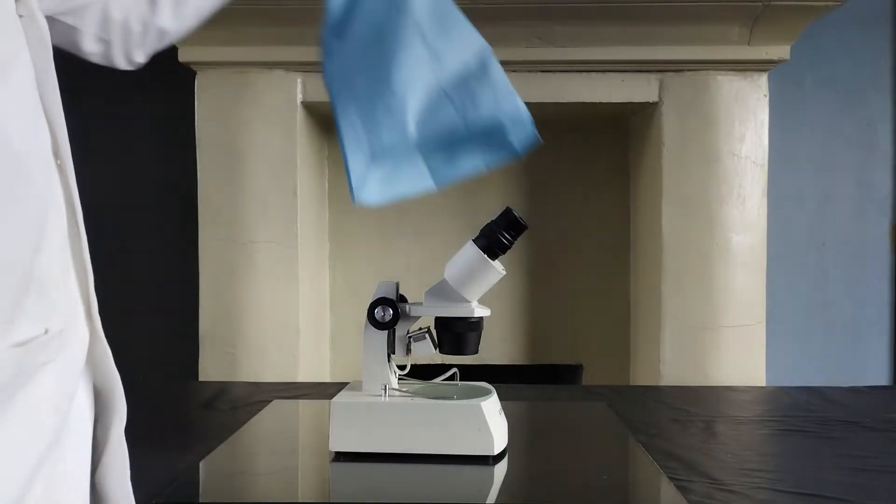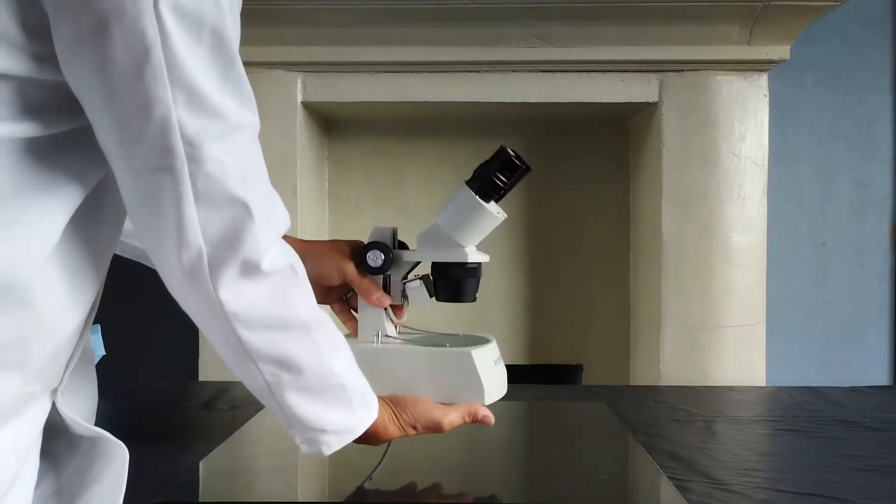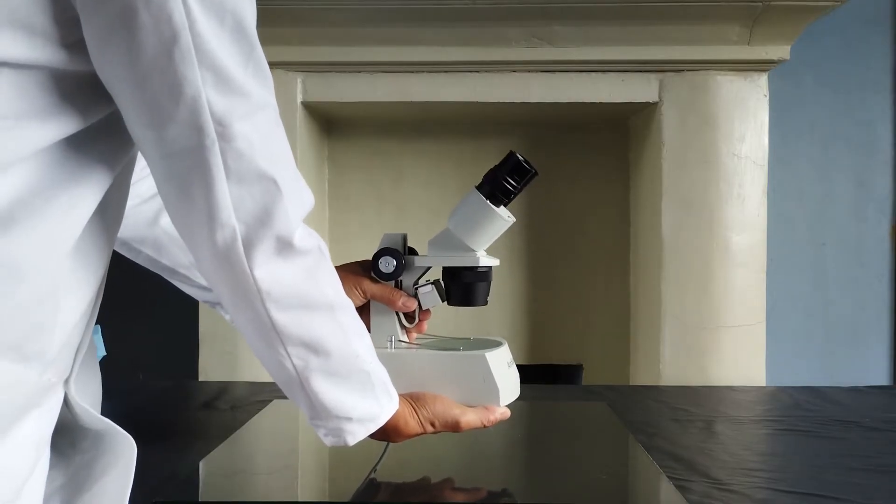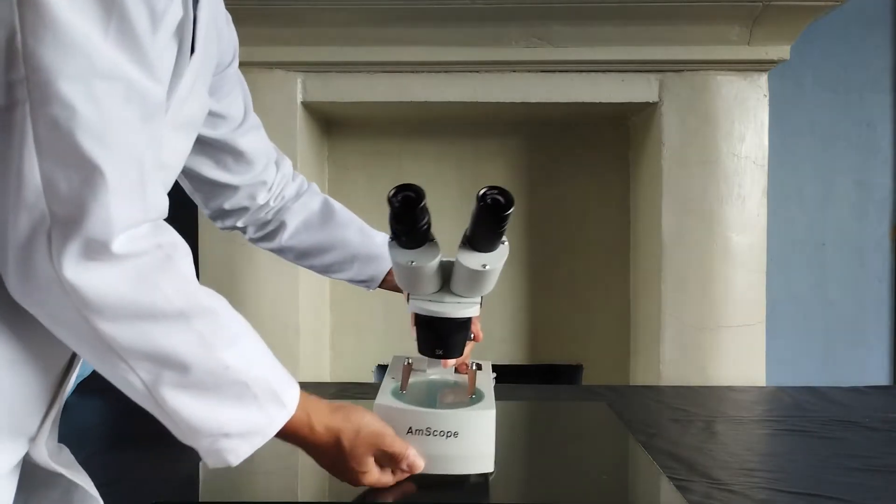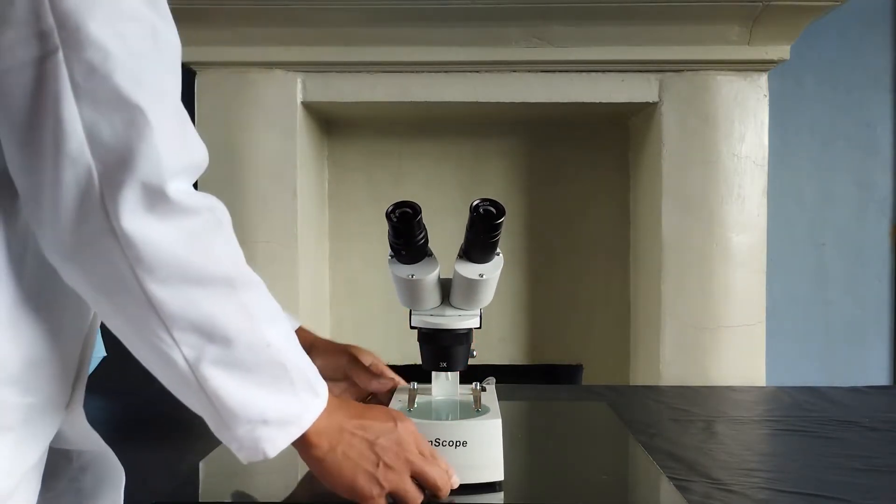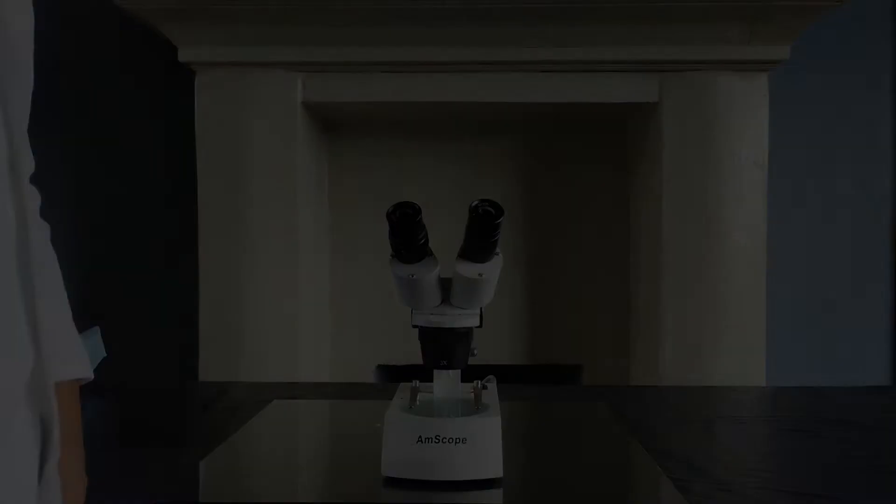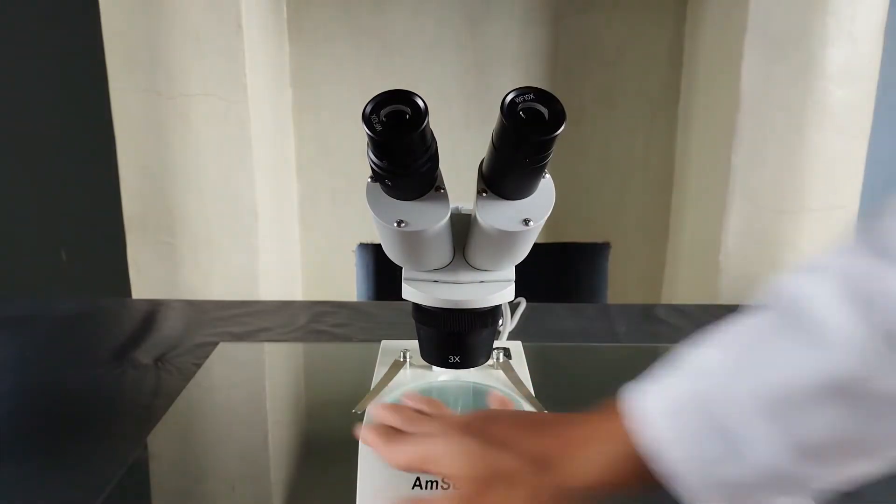Once you remove the Stereo Microscope from its box, bring it to the working table by holding it with both hands, one hand firmly holding the arm of the microscope and the other hand supporting the base of the microscope like so. Safely position the microscope on the table and make sure that the base of the microscope is at least 3 inches away from the edge of the working table. Clean the eyepiece lenses and the stage with lens cloth or lens paper.